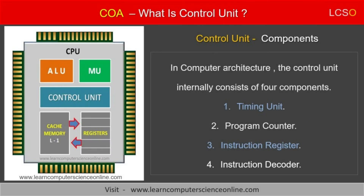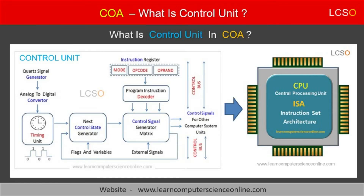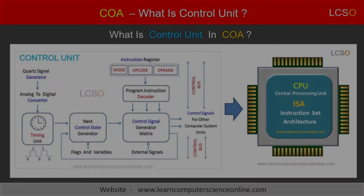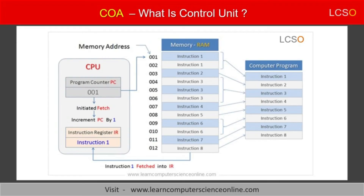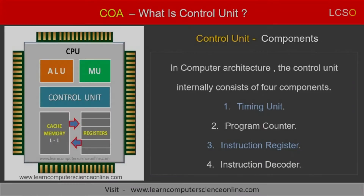The second internal component of the control unit is called the program counter. The program counter register always holds the address of the next instruction that is to be fetched from the memory. The CPU initiates the program execution by placing the address of the first instruction into the program counter register to be fetched from the main memory RAM. The program counter register is automatically incremented each time the current instruction is fetched, and therefore the program counter always contains the address of the next instruction to be fetched from the main memory.